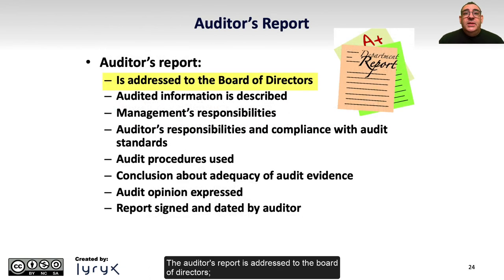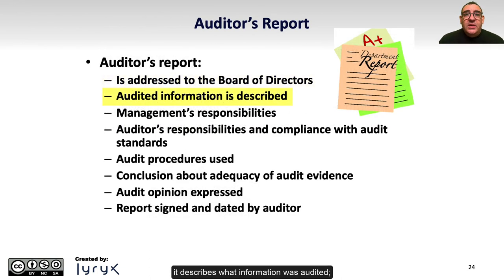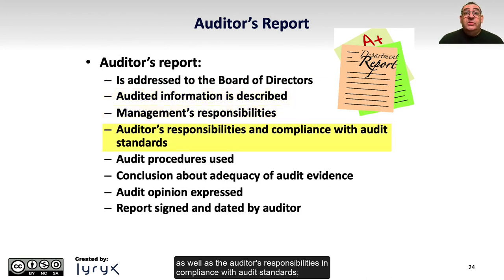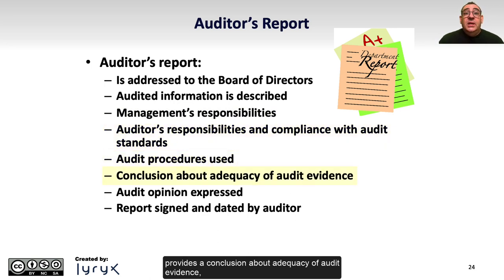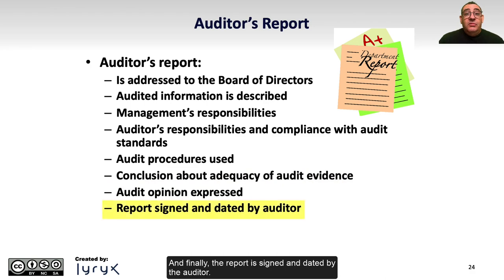The auditor's report is addressed to the Board of Directors. It describes what information was audited, outlines management's responsibilities as well as the auditor's responsibilities and compliance with audit standards, and describes any audit procedures used. It provides a conclusion about adequacy of audit evidence, along with the audit opinion expressed — either qualified or unqualified — and finally, the report is signed and dated by the auditor.